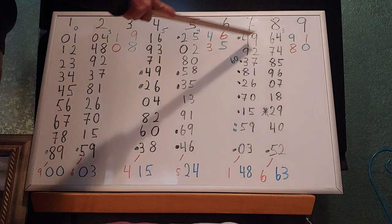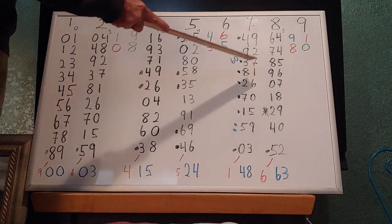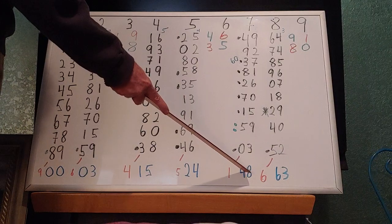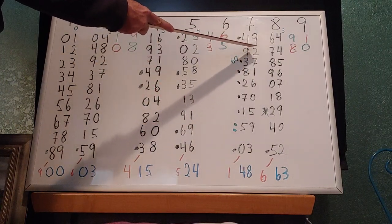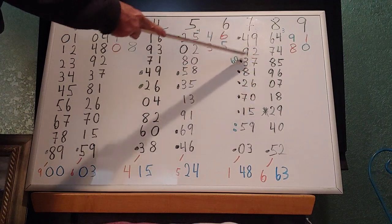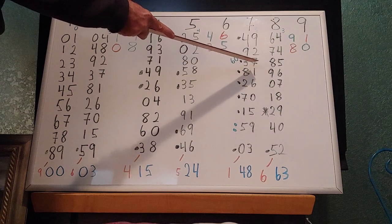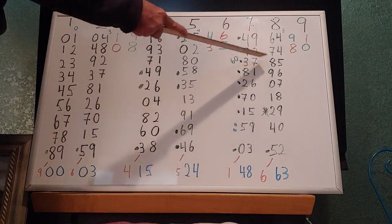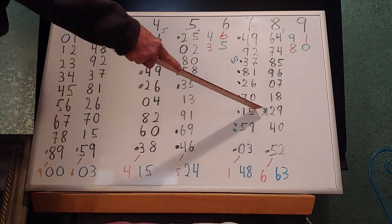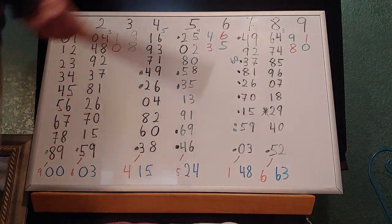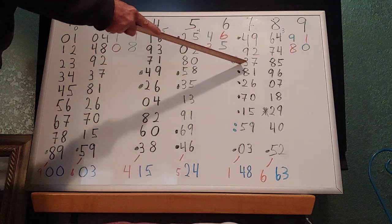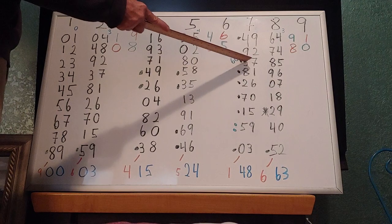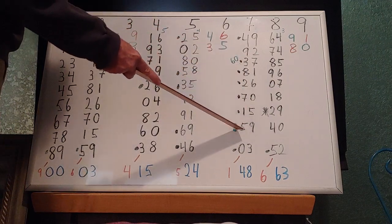We'll do 7, 18 times: 6, 0, 4, 9, 3, 8, 2, 7, 1 — then 4 again — 4, 9, 3, 8, 2, 7, 0, 3. Then 9, 5, 0 — then 3, 9, 5, 0, 6, 1, 7, 2, 8 — then 3, 9, 5, 0, 6, 1, 7, 2, 9. So the repeating is 6, 0, 4, 9, 3, 8, 2, 7, 1, 4. And the ending is 6, 0, 4, 9, 3, 8, 2, 7, 0, 3.